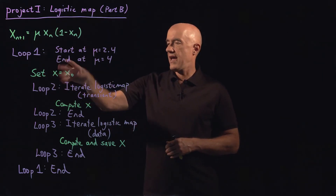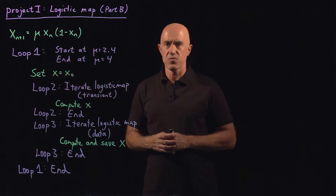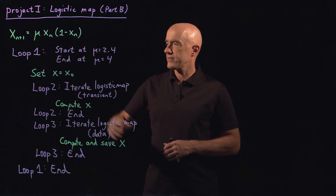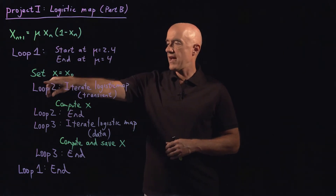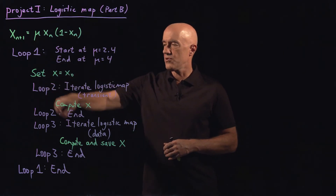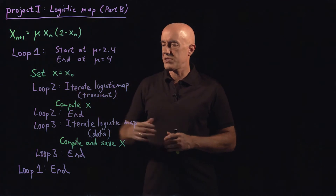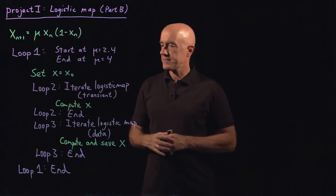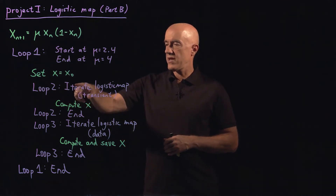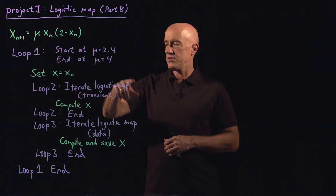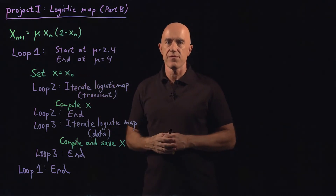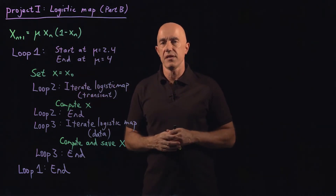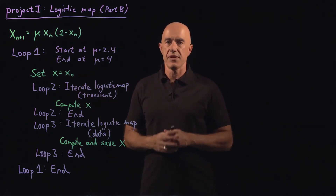I think x naught equals one half is a good value to choose. Then we'll have a first inner loop which is the transient of the map — you iterate the logistic map a fixed number of times to get rid of the transient behavior.